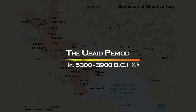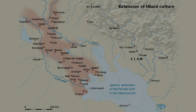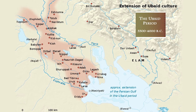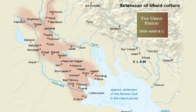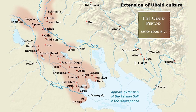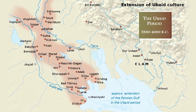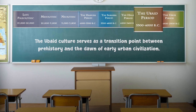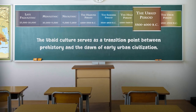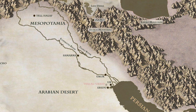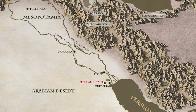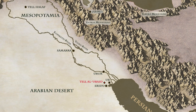The Ubaid Period. The Ubaid culture, a significant period in Mesopotamia, is characterized by the presence of large, unwalled village settlements, multi-roomed rectangular mudbrick houses, and the emergence of the first temples as public architecture. This culture witnessed the development of a two-tiered settlement hierarchy, with centralized large sites of over ten hectares surrounded by smaller village sites of less than one hectare. The Ubaid culture serves as a transition point between prehistory and the dawn of early urban civilization. Its name is derived from the site of Tel al-Ubaid in southern Mesopotamia, where extensive excavations were carried out by Henry Hall in 1919 and later by Leonard Woolley.